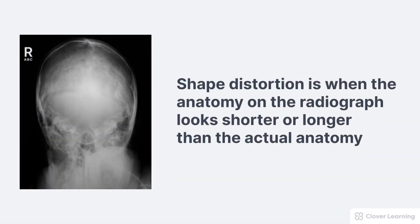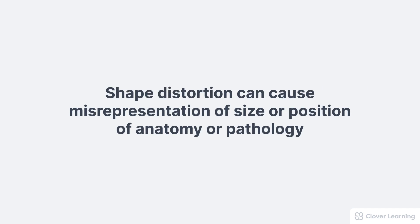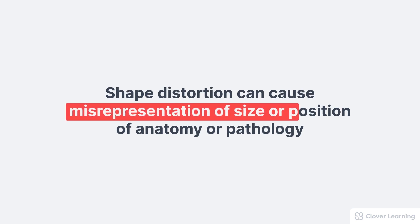Shape distortion is when the anatomy of interest looks shorter or longer on the radiograph than the anatomy truly is. The image of the anatomy will not be true to the actual shape of the object if the x-ray tube, image receptor, or anatomy of interest are out of alignment. Shape distortion is important to be aware of as it can affect a radiologist's ability to accurately diagnose a pathology, and can cause misrepresentation of the size or position of a patient's anatomy or pathology.